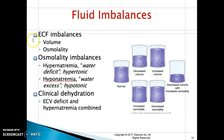Hypernatremia is a water deficit. Hypernatremia occurs when your sodium level is elevated — greater than 145 — and total body water is decreased. Signs and symptoms are largely related to the central nervous system due to brain shrinkage. You might see confusion and altered mental status.